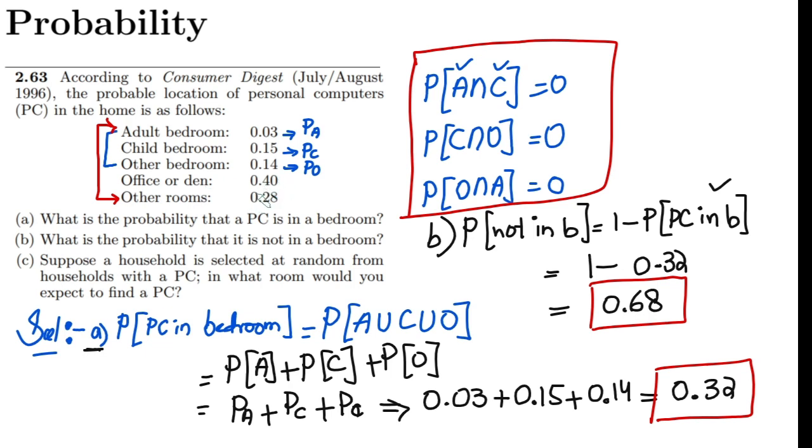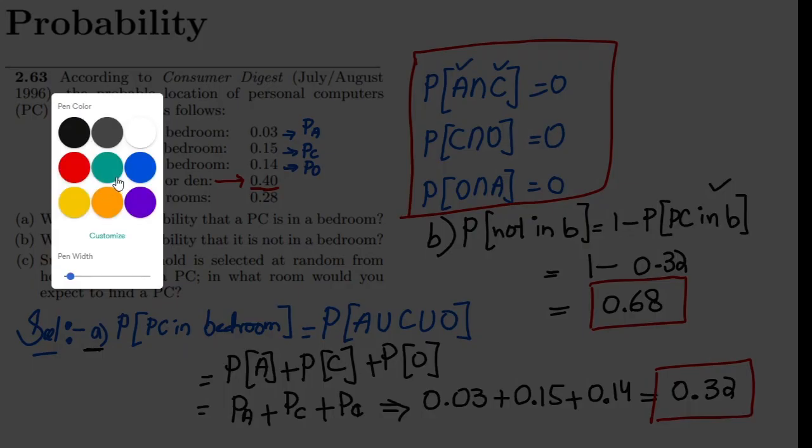If I have to pick a house at random from the different houses having a PC, I can expect here that the higher probability of the availability of PC here is 0.40, and that is in the office or den. So it is highly probable that I will find that PC in the office or in den. That is basically the solution of part (c).